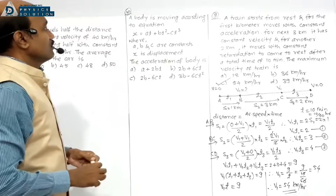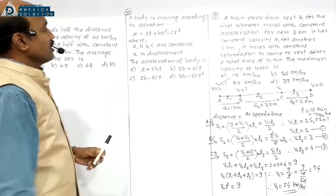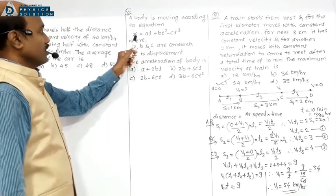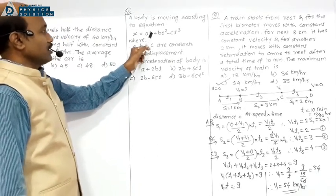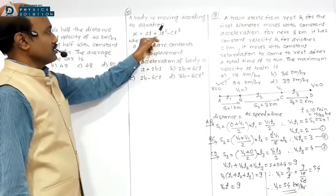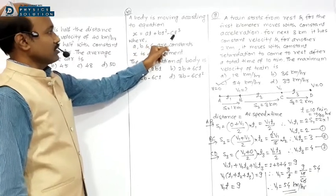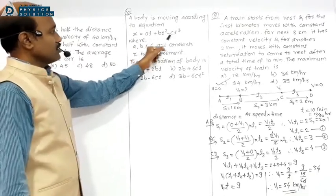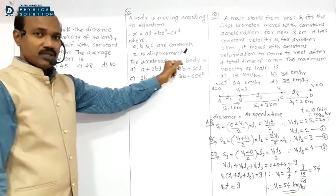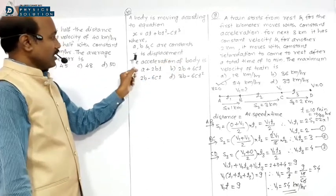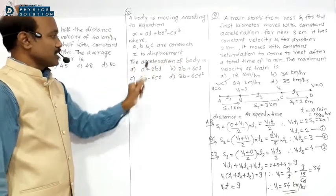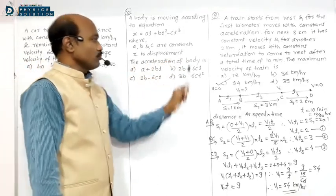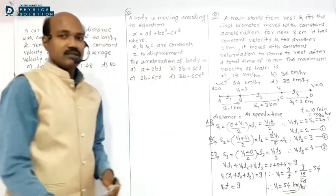Next, numerical number 10: A body is moving according to the equation X = AT + BT² − CT³, where A, B, C are constants and X is displacement. Find the acceleration of the body.